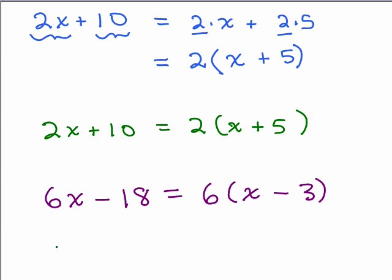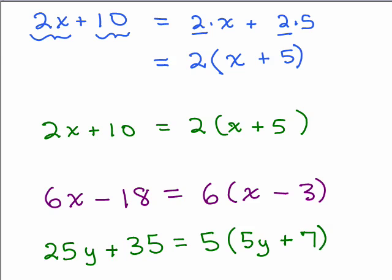How about another one? 25y plus 35, try that one. The greatest common factor here is 5. It goes into both 25 and 35, and 5 times what will give you 25y? 5y, and then 5 times what will give you 35? 7. And in all of these, really, you should go back and multiply back out to see if you would get exactly the same answer.